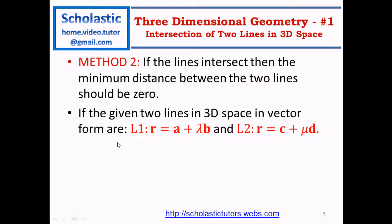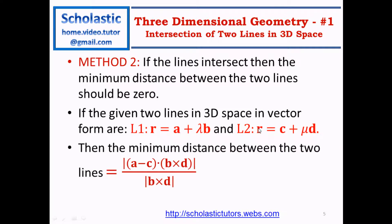If two lines in 3D space are given in vector form as L1: r = a + λb and L2: r = c + μd, then the minimum distance between these two lines can be given by the formula: |(a - c) · (b × d)| divided by |b × d|. This gives a scalar value for the shortest distance between the lines.